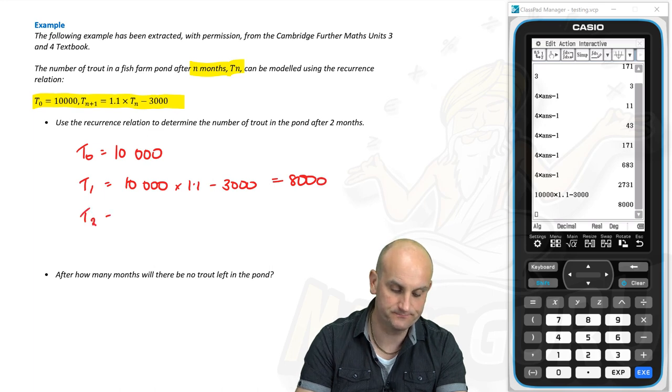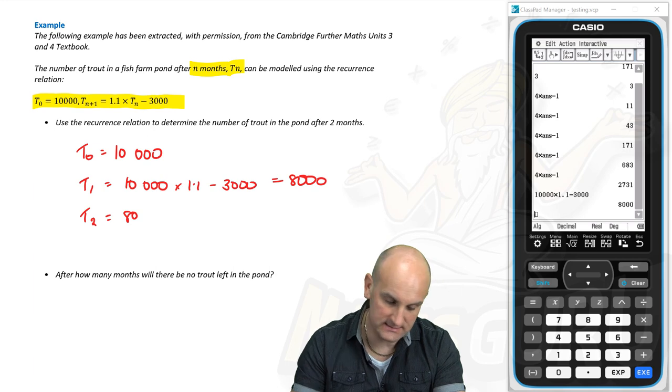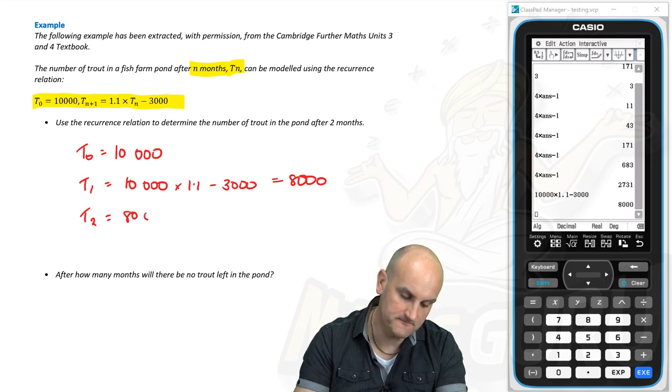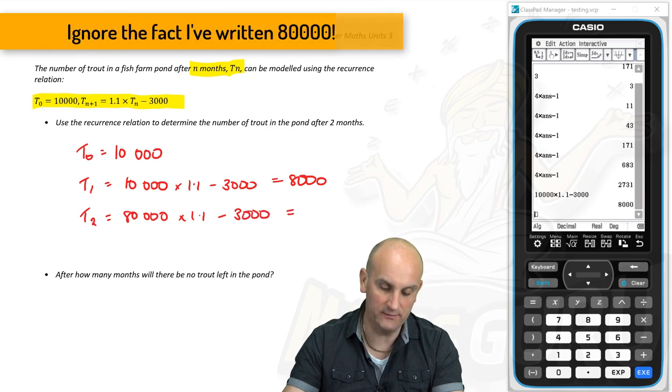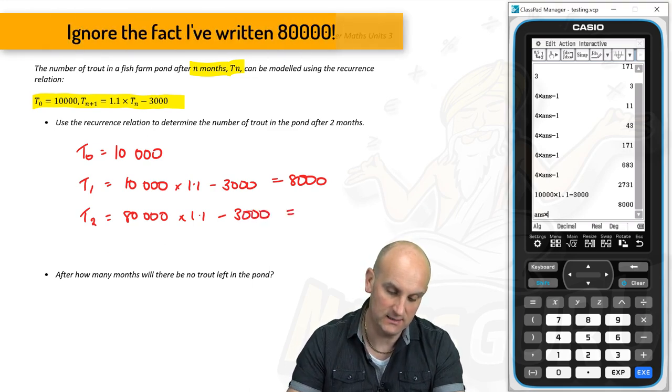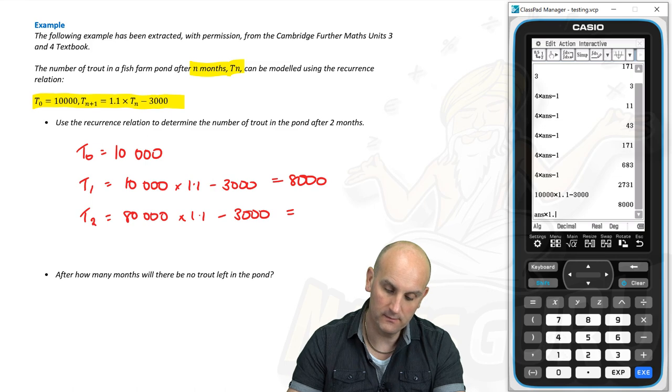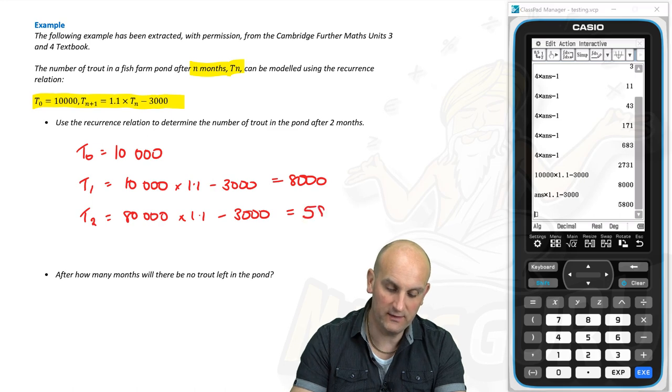How do we get to T_2? Well now 8,000 times 1.1 minus 3,000. It gives me the grand total of 5,800.